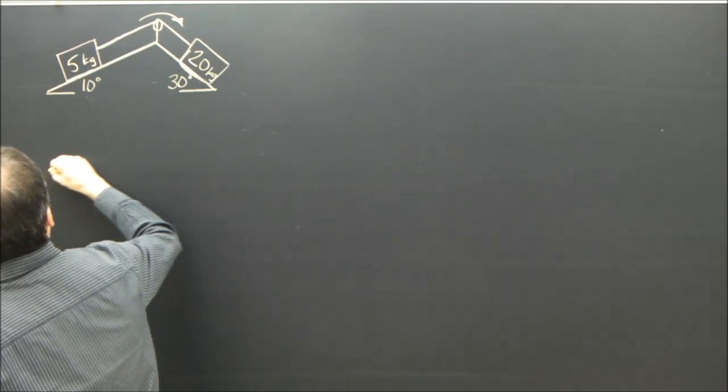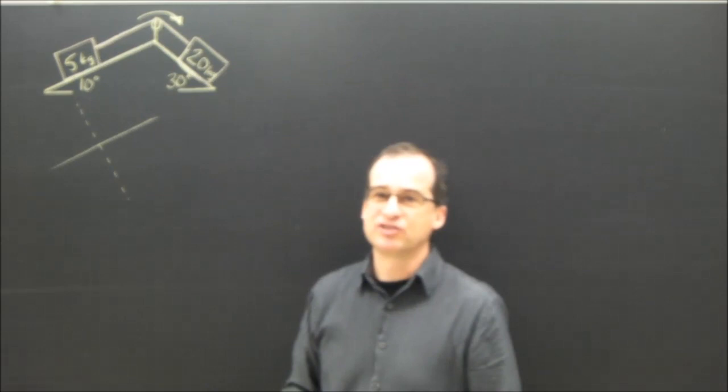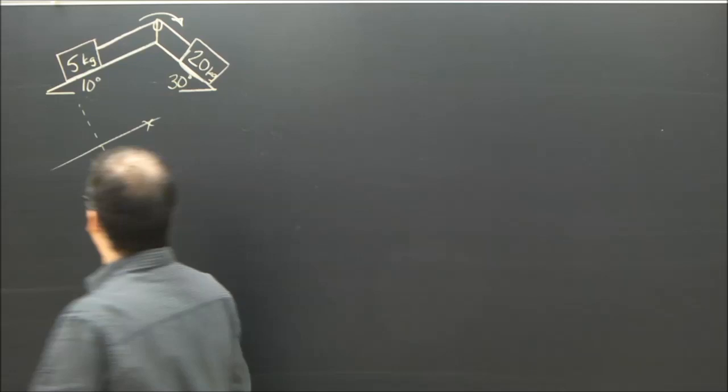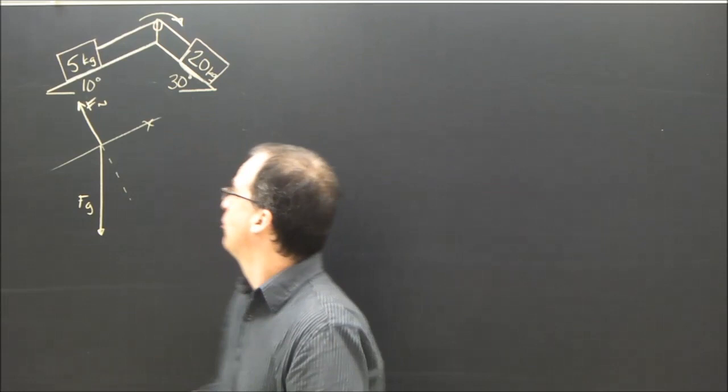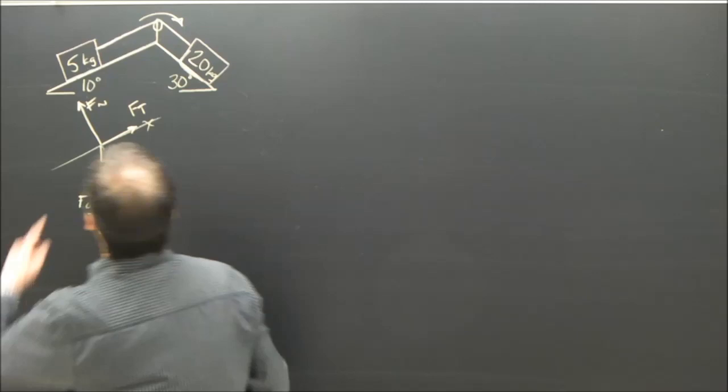Alright, we'll draw the free body diagram for the 5 kilogram. Since it's on a slope, I draw the slope and I'm going to make that my x direction. And I'm going to draw all the forces on it. Is there gravity? Yes, there's gravity. Is it sitting on a surface? Yes, it's sitting on the surface. So there's Fn. Is something pulling on it? Yup, there's a force here pulling on it. Ft. That's the force of the rope pulling on it.